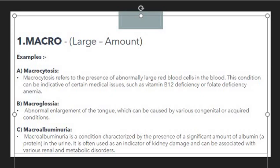Macroalbuminuria is often used as an indicator of kidney damage and is associated with various renal and metabolic disorders. Again, macro is indicating a large or significant amount of albumin in the urine. So whenever you see macro in any word, you can easily identify that it is representing something large — large red blood cells, abnormal enlargement of the tongue, or a significant amount of albumin.